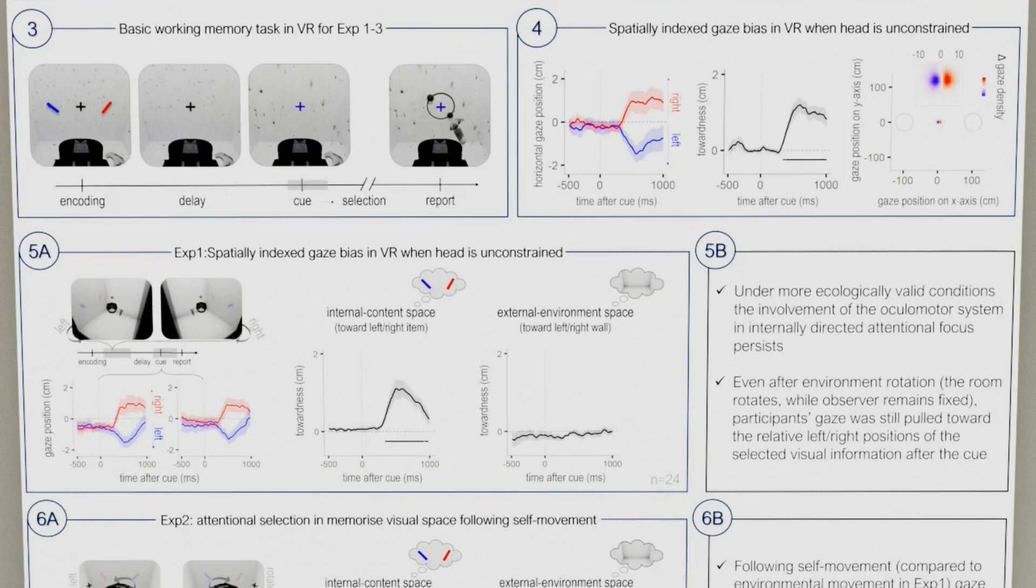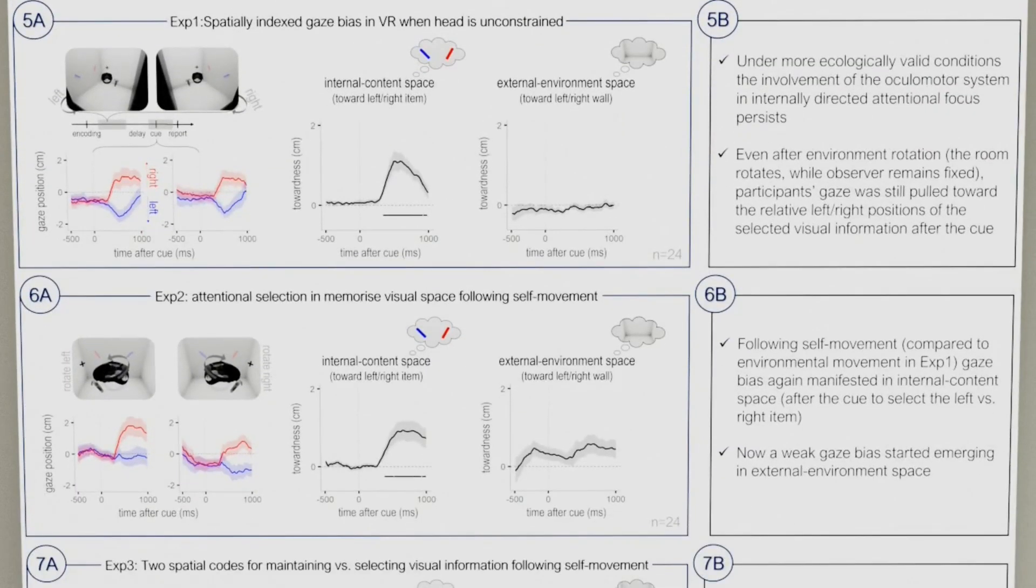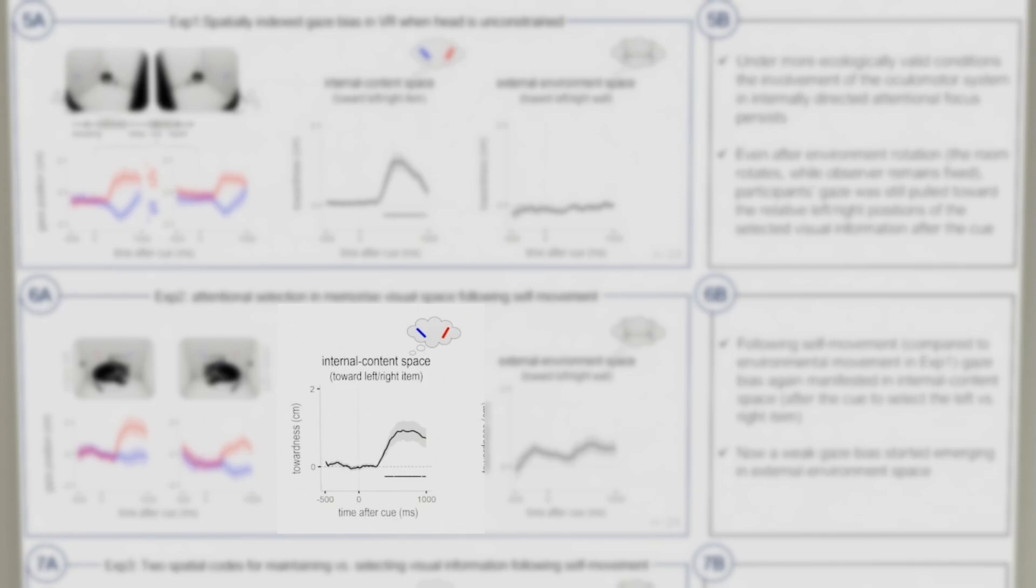In experiment two, we increased the ecological validity of the manipulation. Rather than rotating the room, we instructed participants to turn themselves during the working memory delay. We again found a clear gaze bias in internal content space after the cue to select the left versus right item. We now also started to see signs of a weak gaze bias in the external environment space.